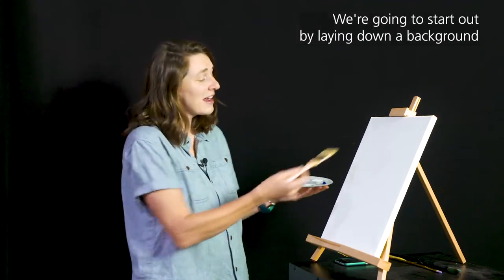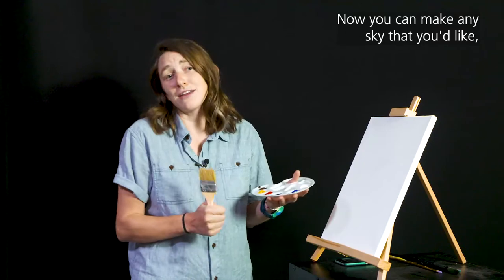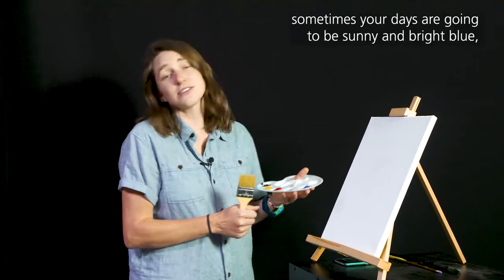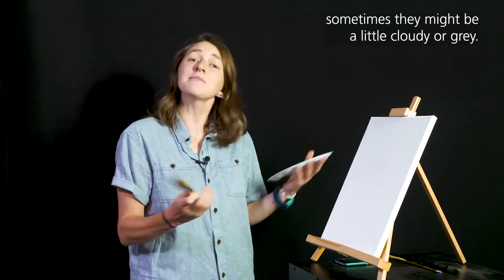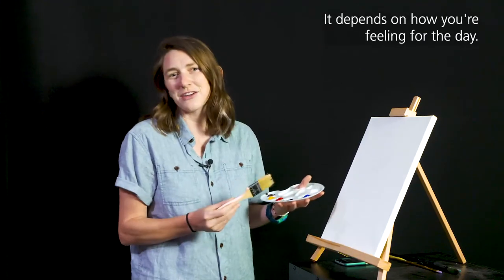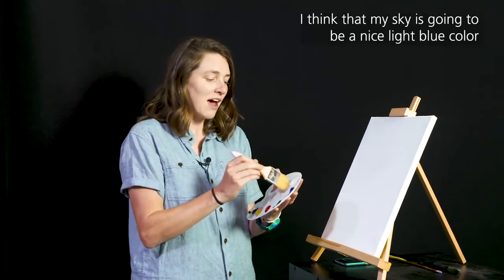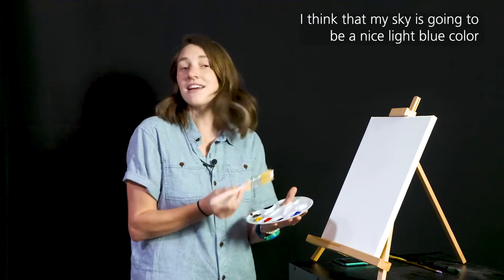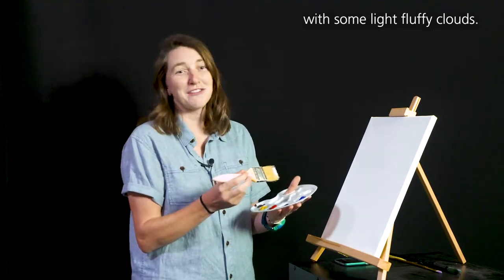We're going to start out by laying down a background of a nice sky. Now you can make any sky that you'd like. Sometimes your days are going to be sunny and bright and blue. Sometimes they might be a little cloudy or gray. Depends on how you're feeling for the day. I think that my sky is going to be a nice light blue color with some light fluffy clouds.